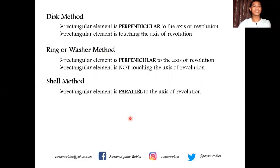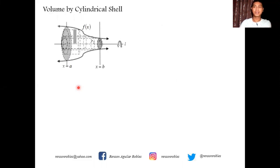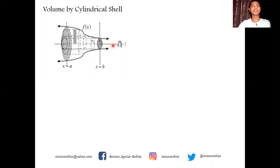We shall now take the case where the element chosen is parallel to the axis of revolution. In this case, we will be using the shell method, or the cylindrical shell method. When the element of the region is revolved about a certain axis of revolution, a cylindrical shell is generated. By definition, a cylindrical shell is a solid contained between two cylinders with a similar axis and similar center.